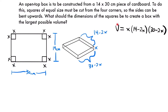Now we have an equation to represent our volume. At this point we'd normally look for a secondary equation or constraint, but notice that our equation is already in terms of one variable — just x. So we don't even need a secondary equation.